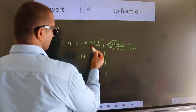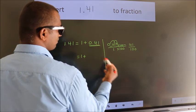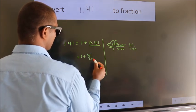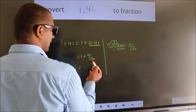1 plus, in place of 0.41, we write 41/100. So 1 plus 41/100.